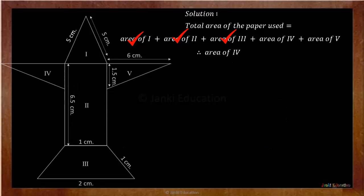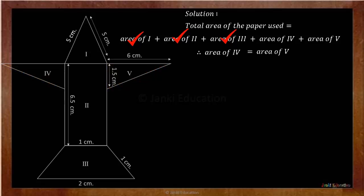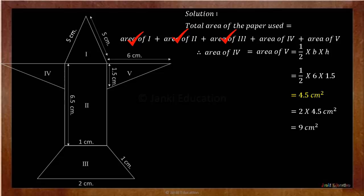Now we will find the area of the fourth figure, which by looking at the figure only we can say is equal to the area of the fifth figure. Both are right angle triangles, so it is easy. Area of triangle is equal to half multiplied by base multiplied by height — that is half multiplied by 6, multiplied by 1.5 — the value is 4.5 centimetre square. But since there are two triangles, we will multiply it with 2, and we come across 9 centimetre square. So we have got values for area of the fourth and fifth figure.